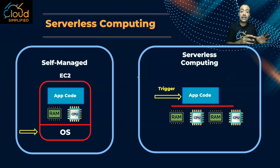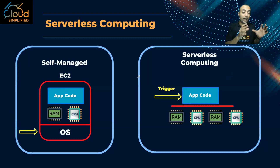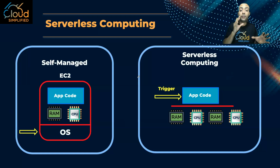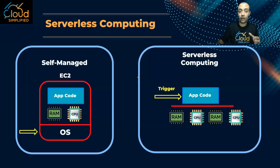The beauty about serverless computing is you don't need to worry about the resources. Once the trigger happens, AWS will start executing the code and AWS will be the one responsible to assign the needed resources for your code to run on the spot. And how do I pay? I pay once my code is being executed — and as we'll see on the next slide, we pay per millisecond. So let's see the characteristics of the Lambda function.